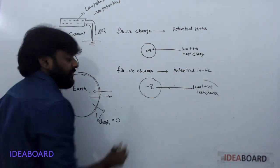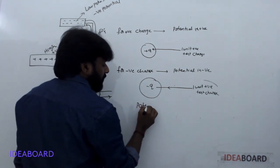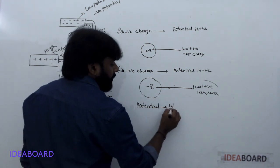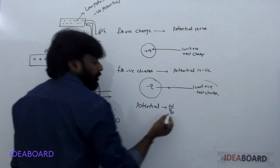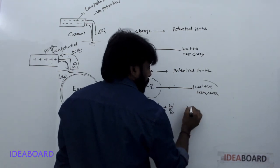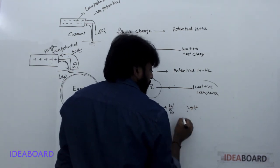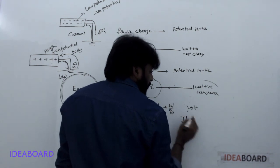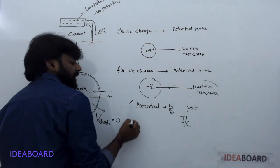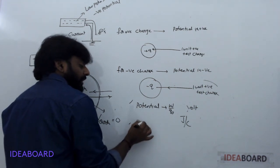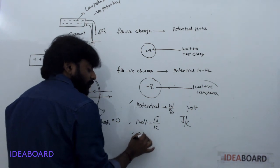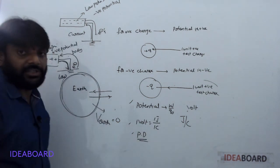So today's concepts: first, potential — work done per unit positive test charge, unit is volt. Next, the definition of one volt: one joule per one coulomb. And finally, potential difference.